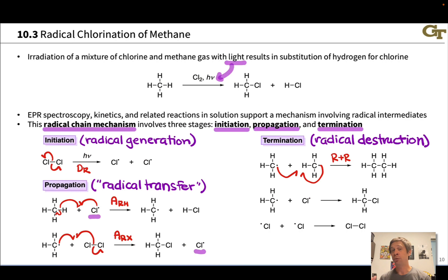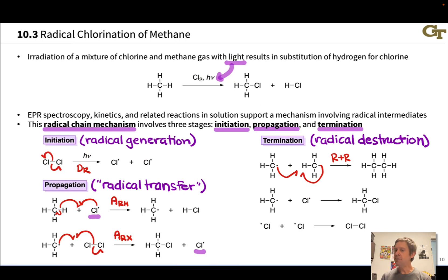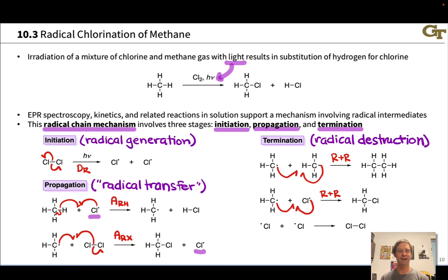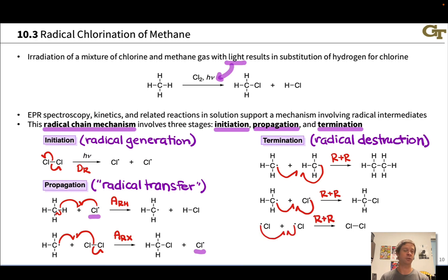For example, two methyl radicals bumping into each other will immediately couple and make ethane, which is undesirable if we want methyl chloride. Even though the coupling of a methyl radical and a chlorine atom creates methyl chloride, this is still a termination step since we're not generating new chlorine radical — it's not propagating the chain. And the coupling of two chlorine radicals to go back to Cl2, which is the reverse of the initiation step, is also a termination event.